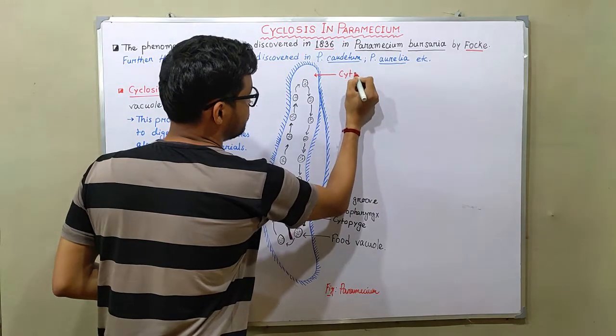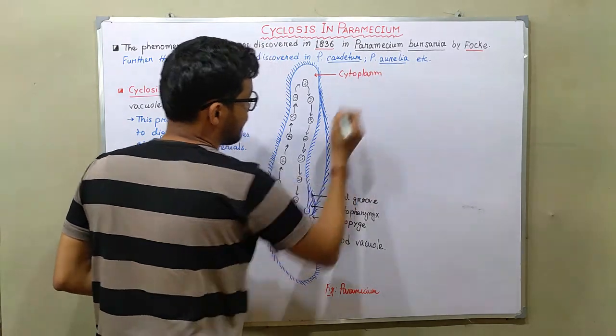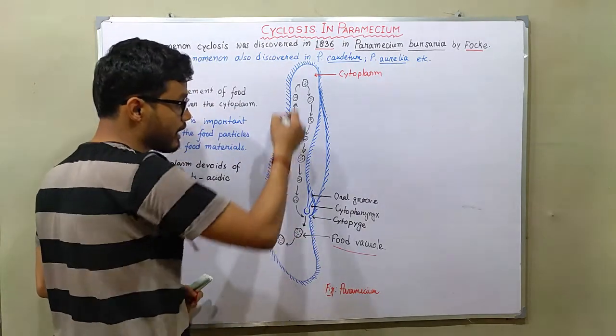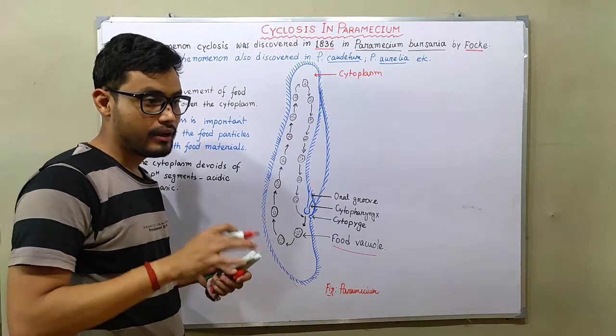So if this is the cytoplasm, and this is the food vacuoles, food vacuoles are moved along with the cytoplasm when the paramecium is slow moving or is attached to a substratum.